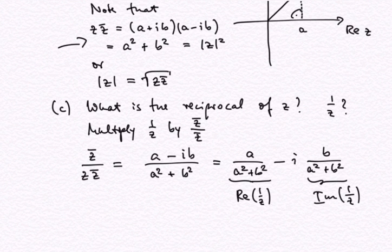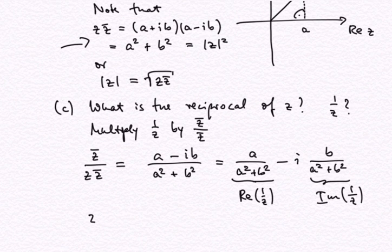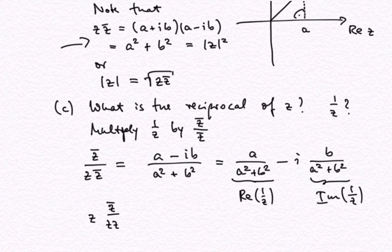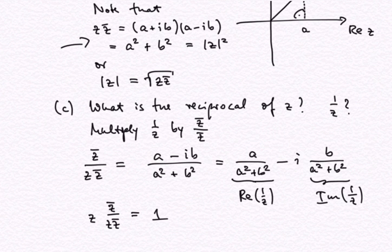We can easily verify that it is the reciprocal of z by multiplying z with z-bar over z·z-bar, and obviously we get 1. So this is indeed the reciprocal.